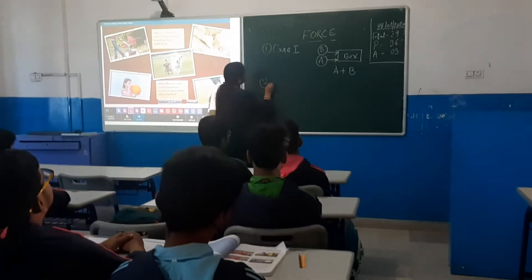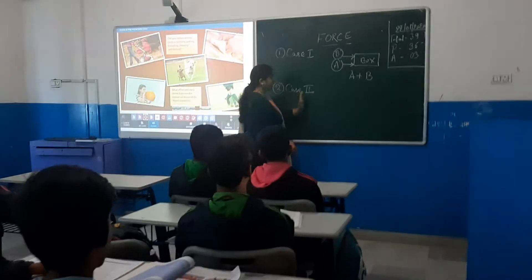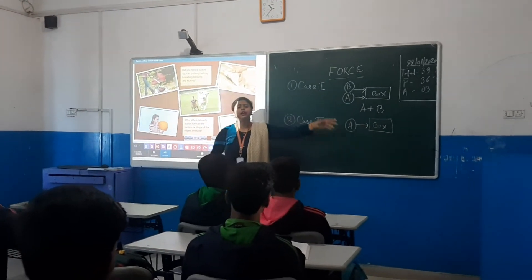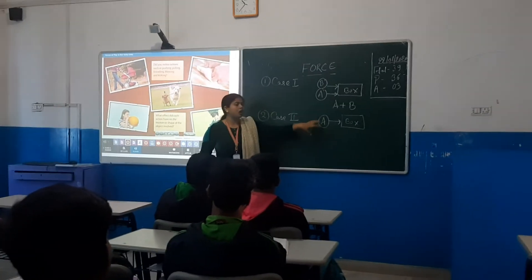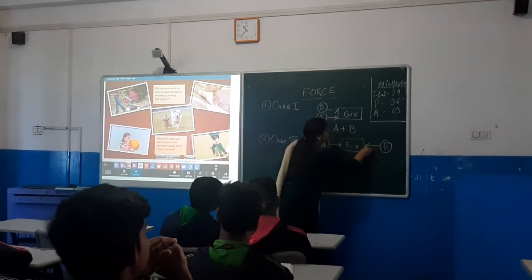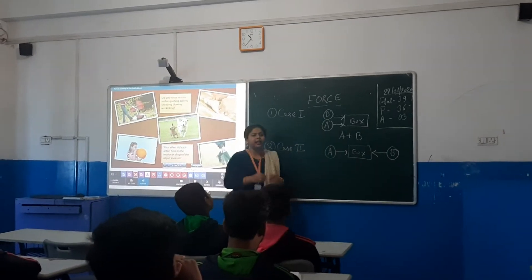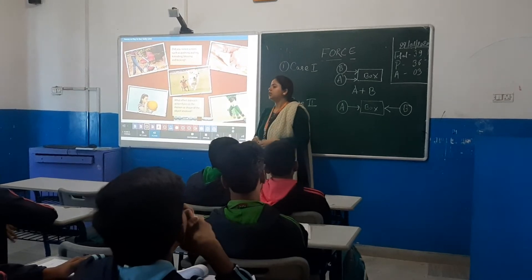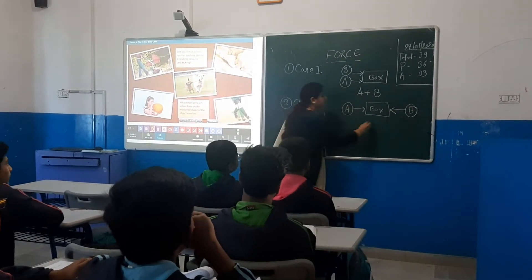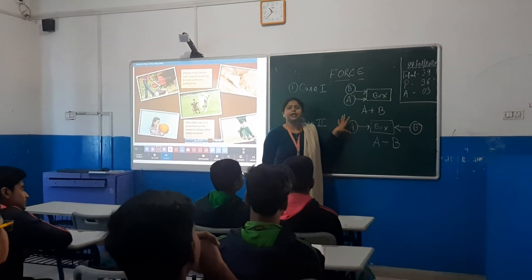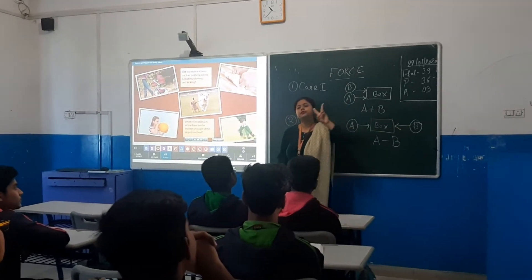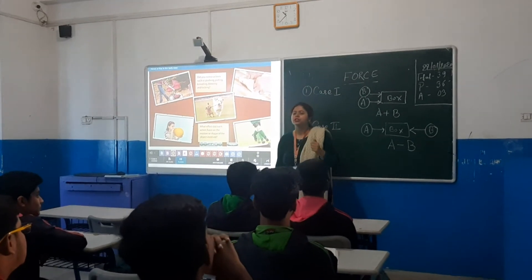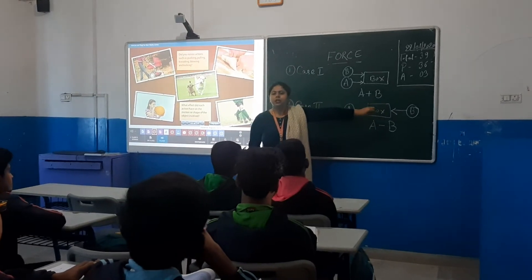We will come to case number two. The same box is taken. Boy A is pushing the box in one direction. Boy B will not push in the same direction — he will come and push the box in the opposite direction. What is the resultant force acting on this box? It will be the difference between the forces applied by the two. Suppose A applies a force of five Newtons and B applies two Newtons. Then the resultant force acting on the box will be five minus two, which is three Newtons. Understood?